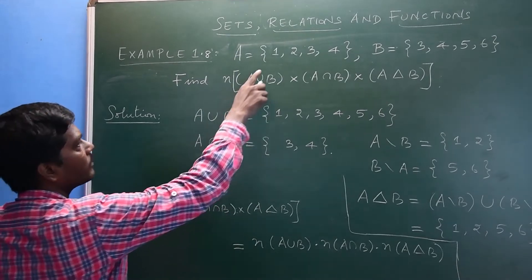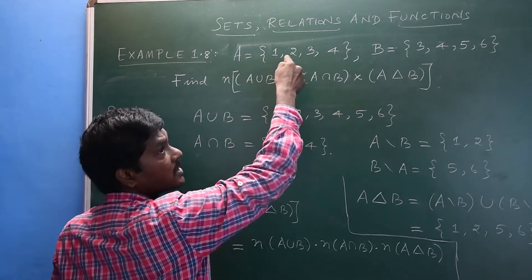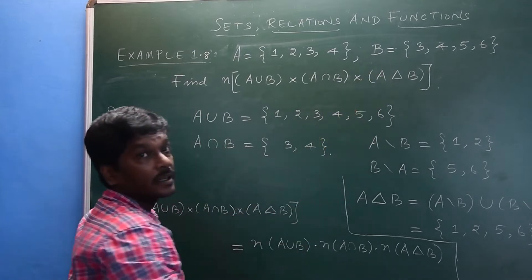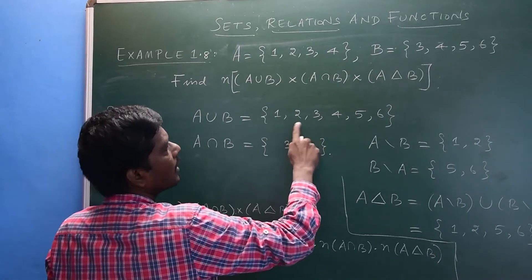Now what is A union B? A union B is elements which are in A as well as in B, so which is 1 to 6.